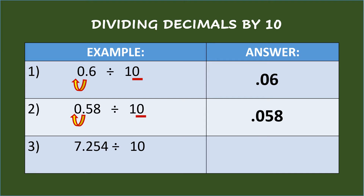Third example: seven and two hundred fifty-four thousandths divided by ten. Again, the divisor has only one zero, so move the decimal point of the dividend once to the left and put the decimal point afterwards. So the answer is seven thousand two hundred fifty-four ten-thousandths.